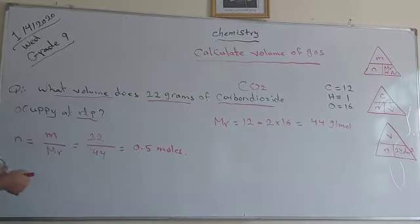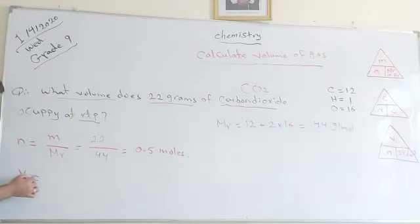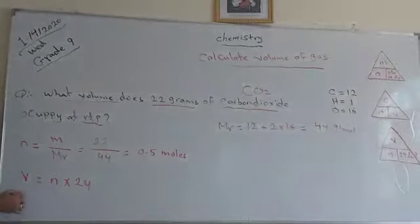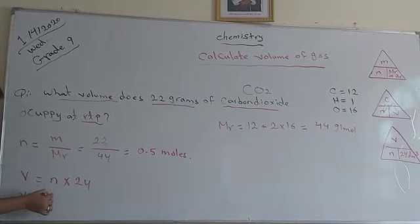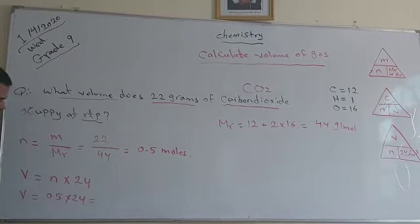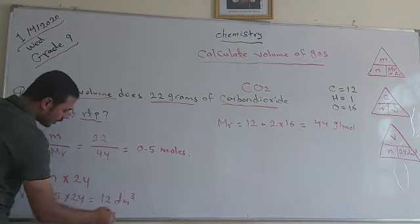So the number of moles is 0.5. V equals 0.5 times 24, which equals 12 dm³.